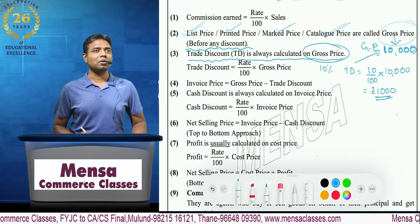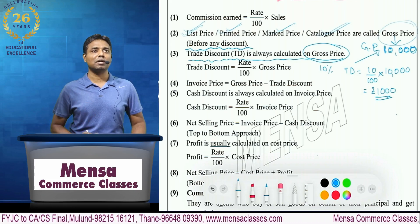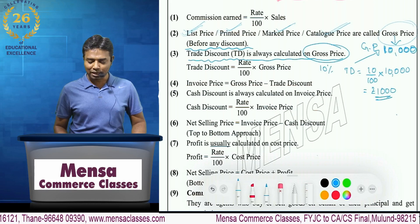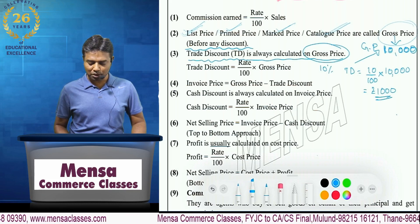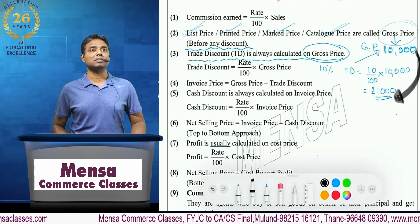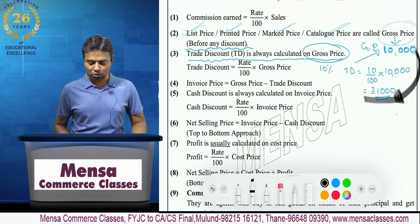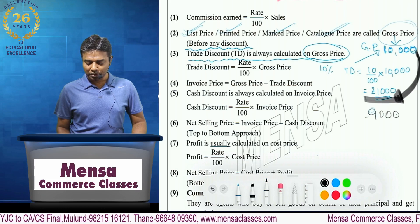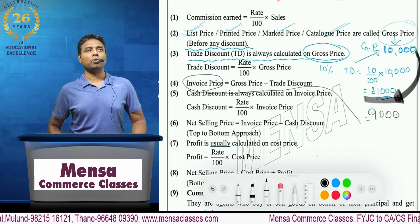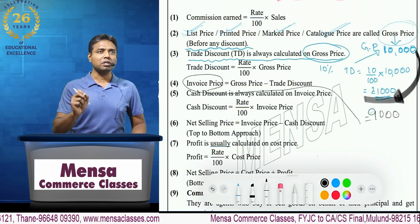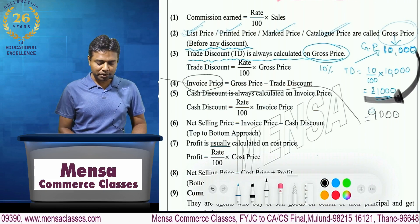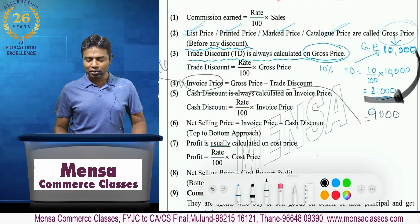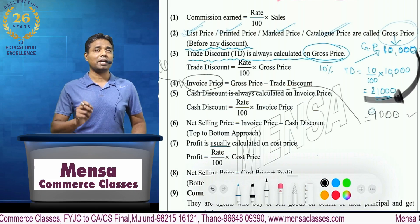Getting the point? Discount will reduce the price — discount se jo paise hum ko barna hai, usmein kami hogi, reduction hoga. Discount is always subtracted. So, 10,000 mein se 1,000 minus karo — ham ko milega 9,000. This 9,000 is called as the invoice price. Invoice price = gross price minus trade discount. Invoice ka meaning hota hai bill — toh bil kitne ka banega? 9,000 ka bil banega.